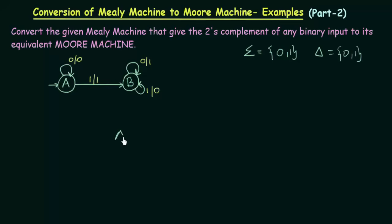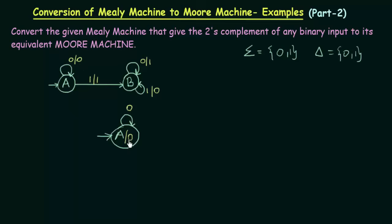We start with the starting state, that is state A. A is my starting state or the initial state. We see that A on getting input 0, it goes to A itself and gives the output 0. So I can associate the output 0 to state A, and say that when A gets input 0, it goes to A itself. The output 0 is now associated to state A.